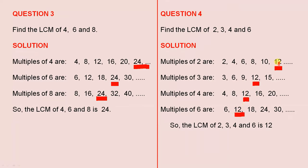That's the lowest number that occurs in all four lists. So the LCM of 2, 3, 4 and 6 is 12.